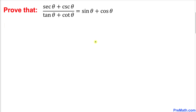Welcome to pre-math. In this video lecture we are going to prove the trigonometric identity: secant theta plus cosecant theta, divided by tangent theta plus cotangent theta, equals sine theta plus cosine theta.